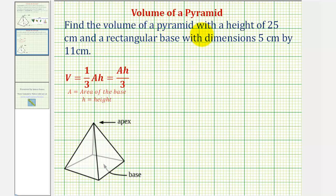We want to find the volume of a pyramid with a height of 25 centimeters and a rectangular base with dimensions 5 centimeters by 11 centimeters.